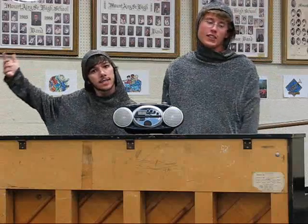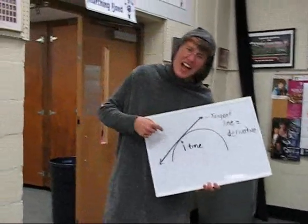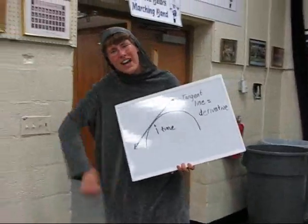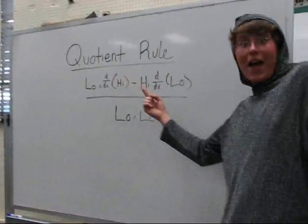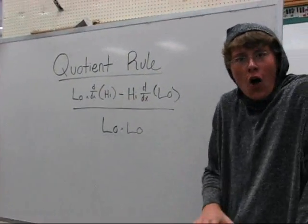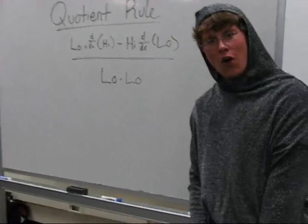I'm talking about finding the tangent line, only touches the graph one time, cause derivative's too fine. Now the quotient rule we know, high d low minus low d high, all over low low.